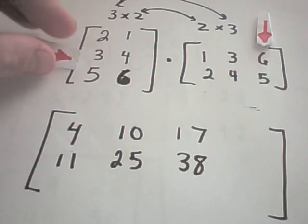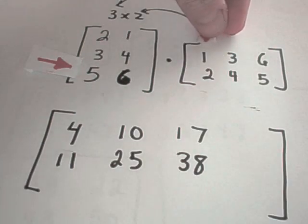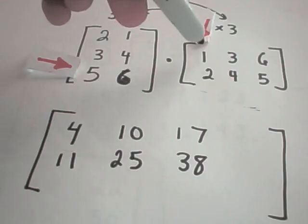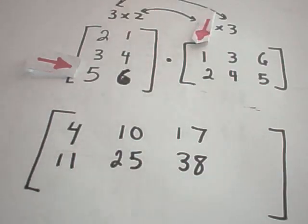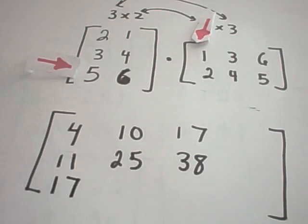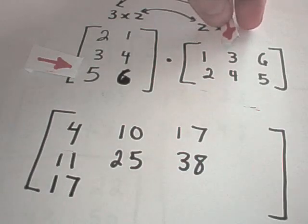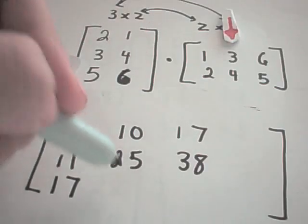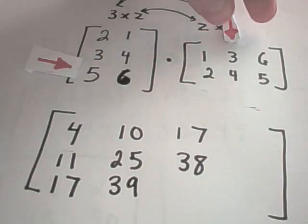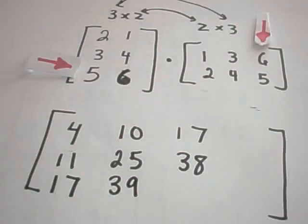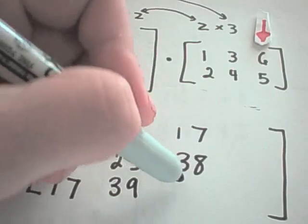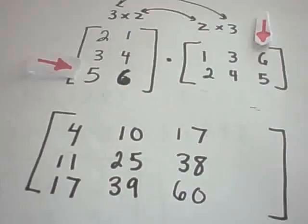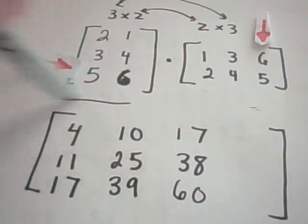And lastly, I go to my last row. 5 times 1 is 5, 6 times 2 is 12, 5 and 12 is 17. 5 times 3 is 15, 6 times 4 is 24, 24 plus 15 is 39. And last but not least, 5 times 6 is 30, 6 times 5 is also 30, 30 and 30, if I add those, gives me 60. And this will be your final answer.